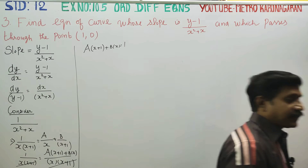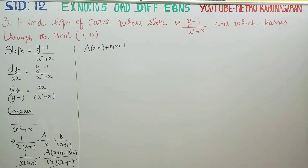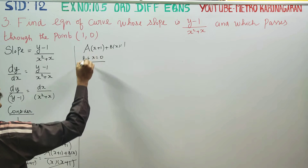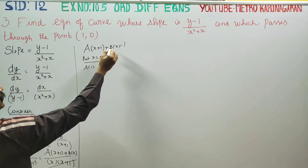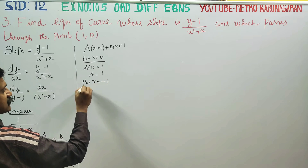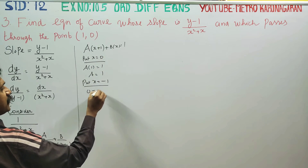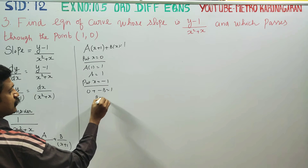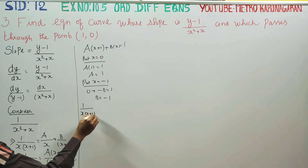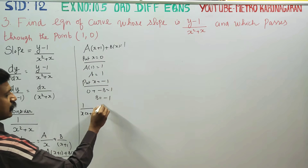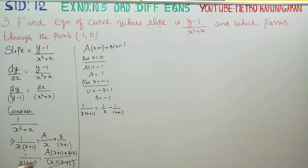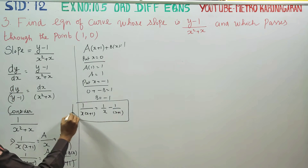Separating variables: dy/(y-1) = dx/(x²+x). For partial fractions of 1/[x(x+1)]: putting x=0, A=1; putting x=-1, -B=1 so B=-1. Therefore 1/[x(x+1)] = 1/x - 1/(x+1). Now returning to our sum.